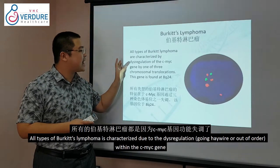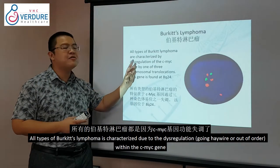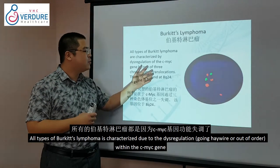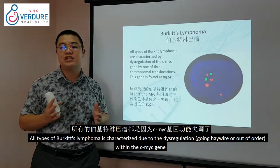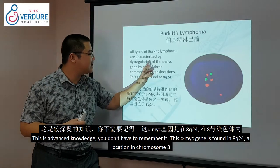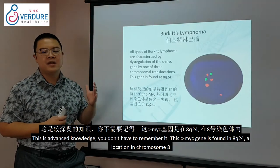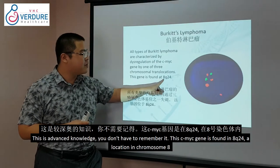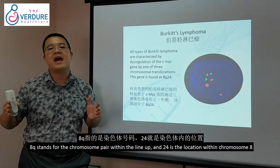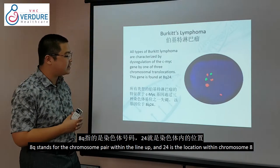All kinds of Burkitt's lymphoma are due to the deregulation — going haywire — within the C-MYC gene. This C-MYC gene is found at the 8Q24 location on chromosome 8. 8Q refers to the chromosome pair position, and 24 is the specific location within chromosome 8.